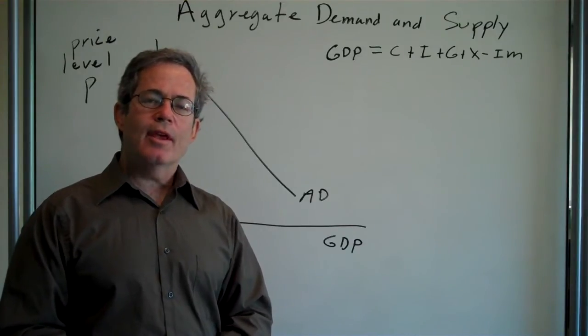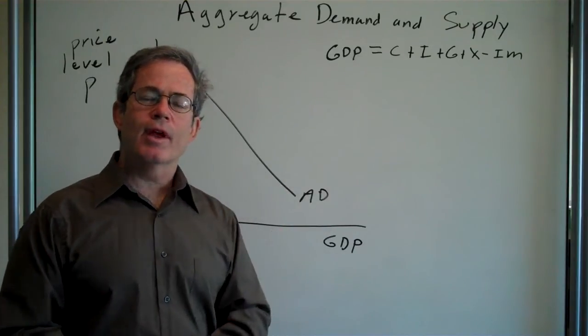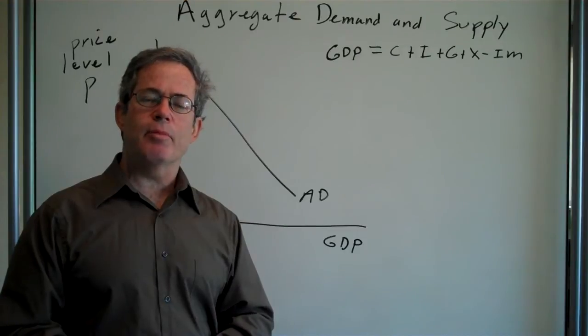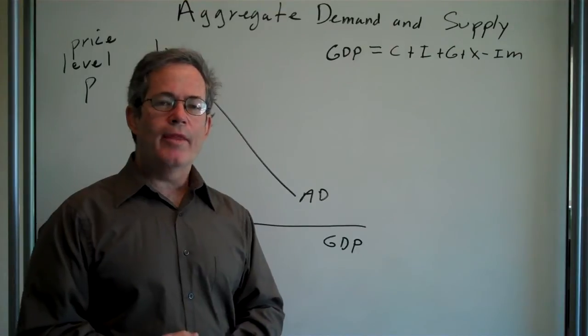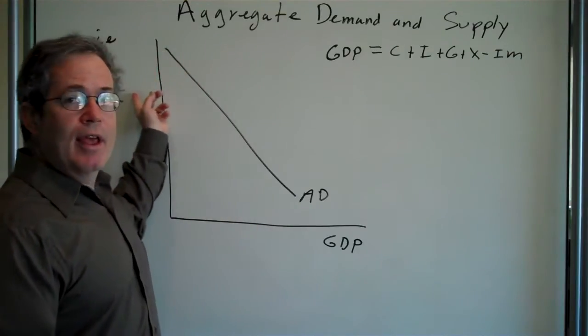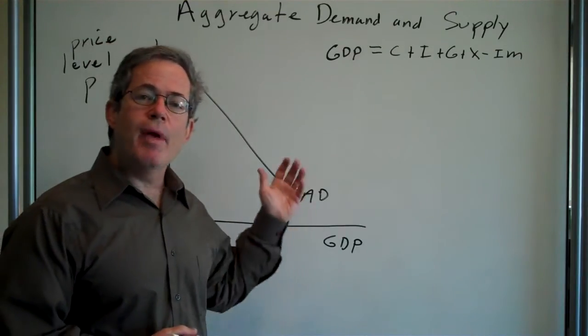Now, what happens in this graph if the government wants to go in and spend more on aircraft carriers, bombs, schools, and so forth? Well, in that case, at any given price level, demand shifts out.